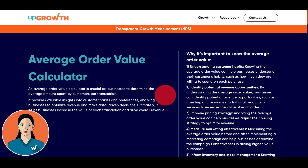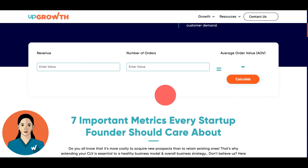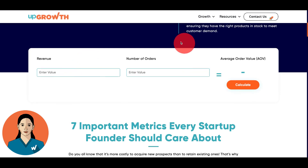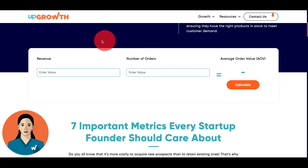To make calculating AOV even easier, our user-friendly calculator does the work for you. Here's what you need to input: first, total revenue — the total amount of sales generated within a specific time frame, for example monthly, quarterly, or yearly. And second, the number of orders — the total number of customer orders placed during the same time frame.